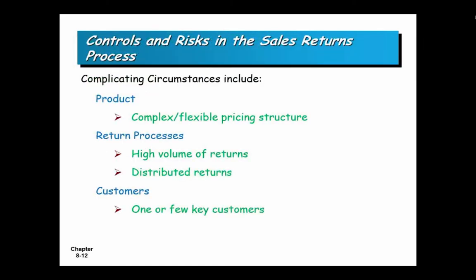The returns process has complicating factors. One or few key customers is a major factor — if Walmart says they didn't like the quality of something you shipped, you take it back without argument because you don't want to lose bigger business over a small problem. So if you have very few customers, you have to bend over backwards for their needs.